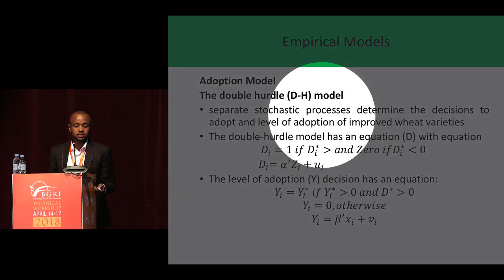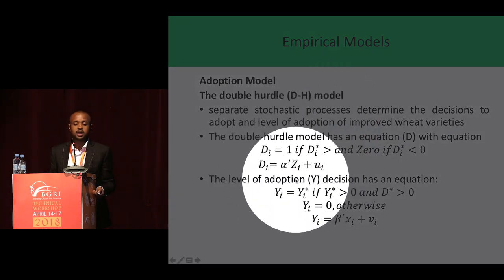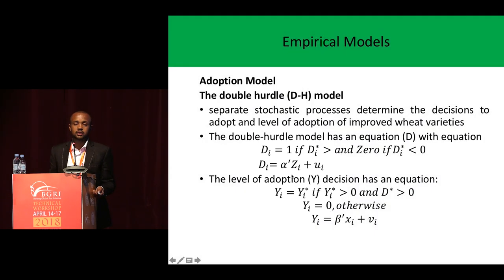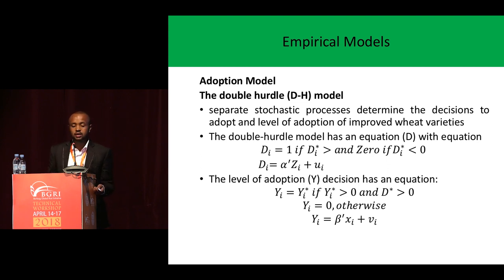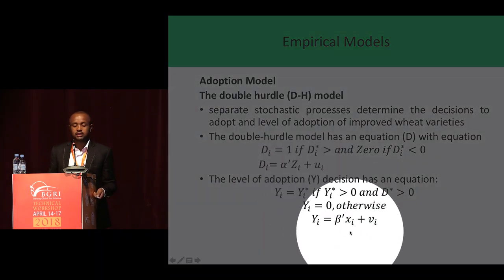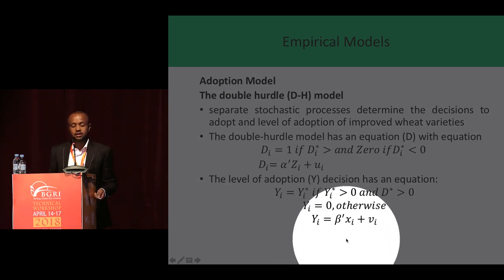The double-hurdle model has two equations. The first equation determines the determinants of adoption. Farmers make two decisions during adoption of agricultural technologies. First, they decide whether to adopt or not. Second, given a decision to adopt, they decide how much area or resources to allocate — for example, how much area to allocate to improved wheat varieties. The second equation determines the level of adoption of improved wheat varieties.